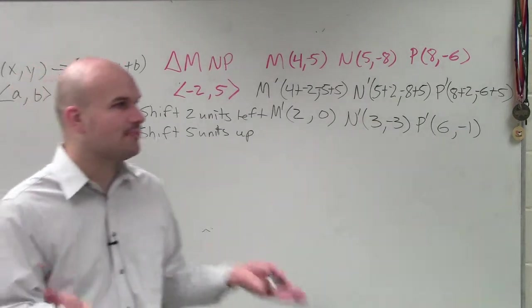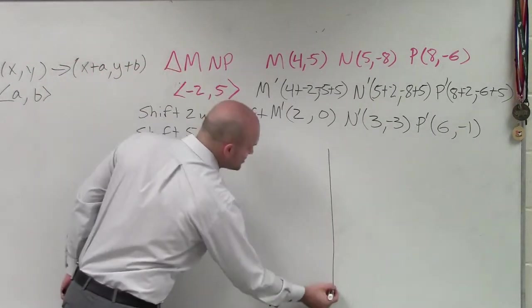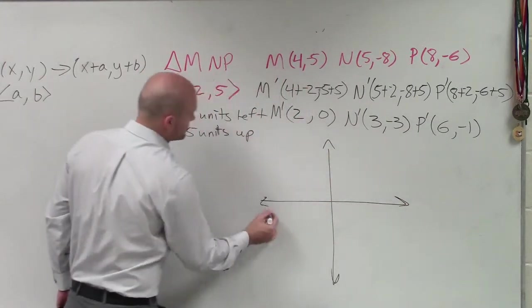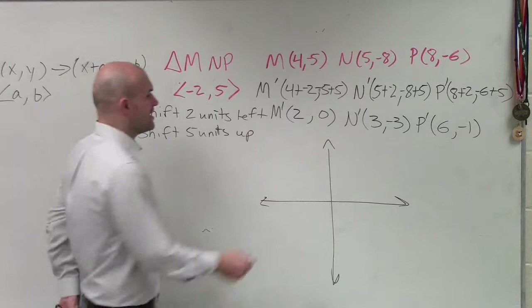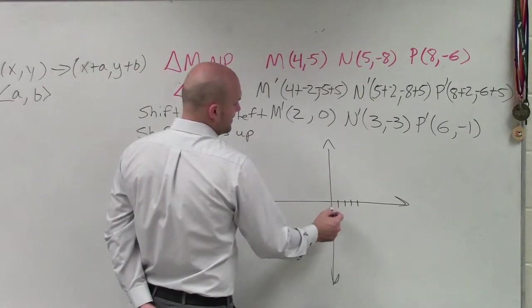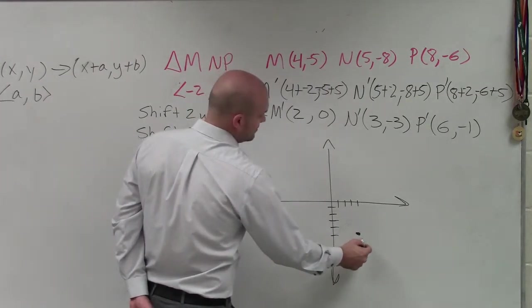So now what I have, ladies and gentlemen, is a set of 6 points. So I'm going to graph my original image first. And then I'm going to graph my reflected image. So at first, my graph point is 4, negative 5. So 1, 2, 3, 4, negative 5. And that's point M.